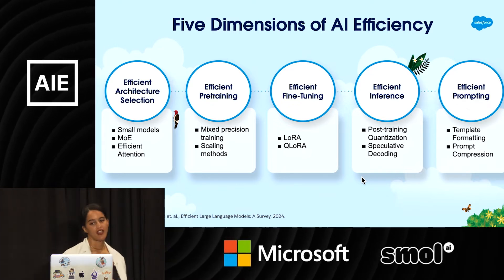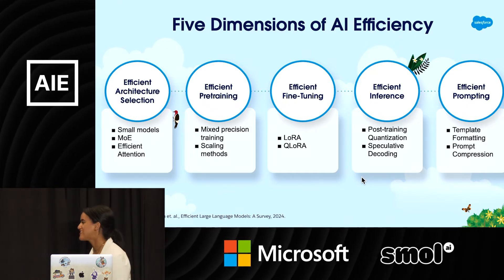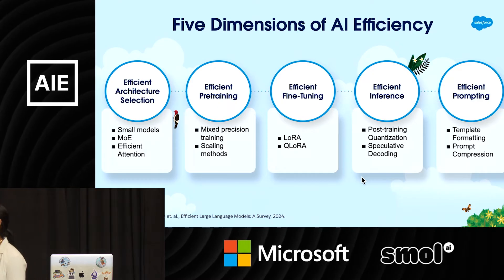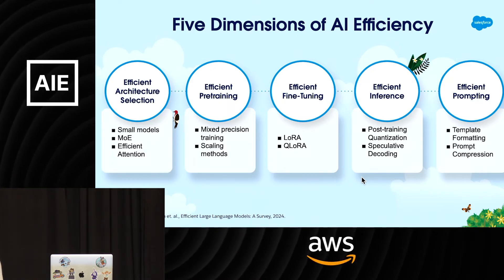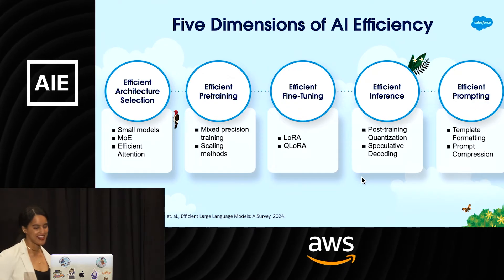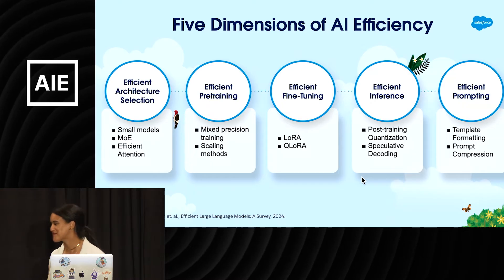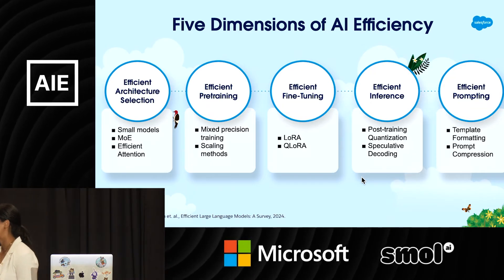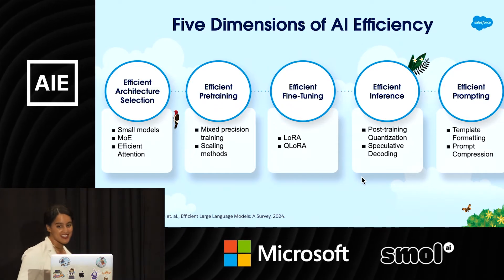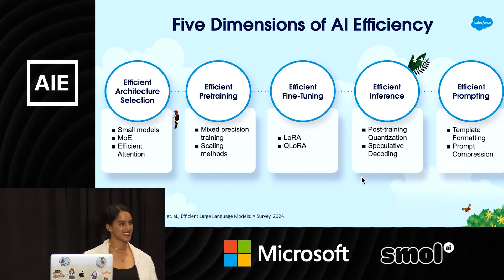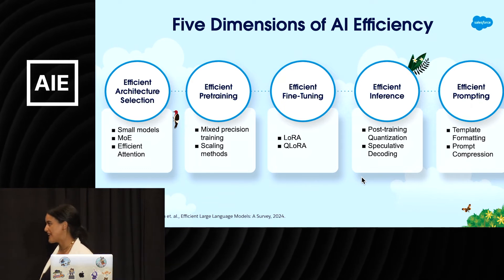Fourth, efficient inference. You've got your model — it's pre-trained, it's fine-tuned, and you're almost ready to serve it. How can we do that efficiently? We're paying for cost to serve, so consider post-training quantization and speculative decoding, among many others. And finally, fifth, prompting. Prompts consume memory and directly affect latency. You want your prompts to be as concise as possible — think about template formatting and prompt compression.